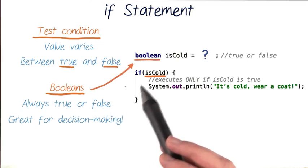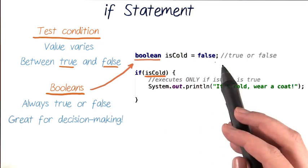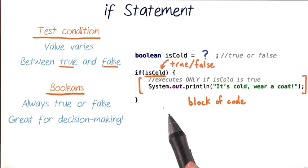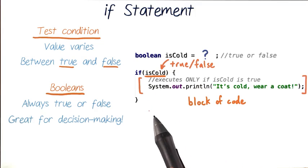So let's say we have access to this boolean isCold, but we don't know whether it will be true or false. The next thing in our if statement is a block of code, which can be multiple lines of code and comments. And this code will only execute if the test condition isCold is true.